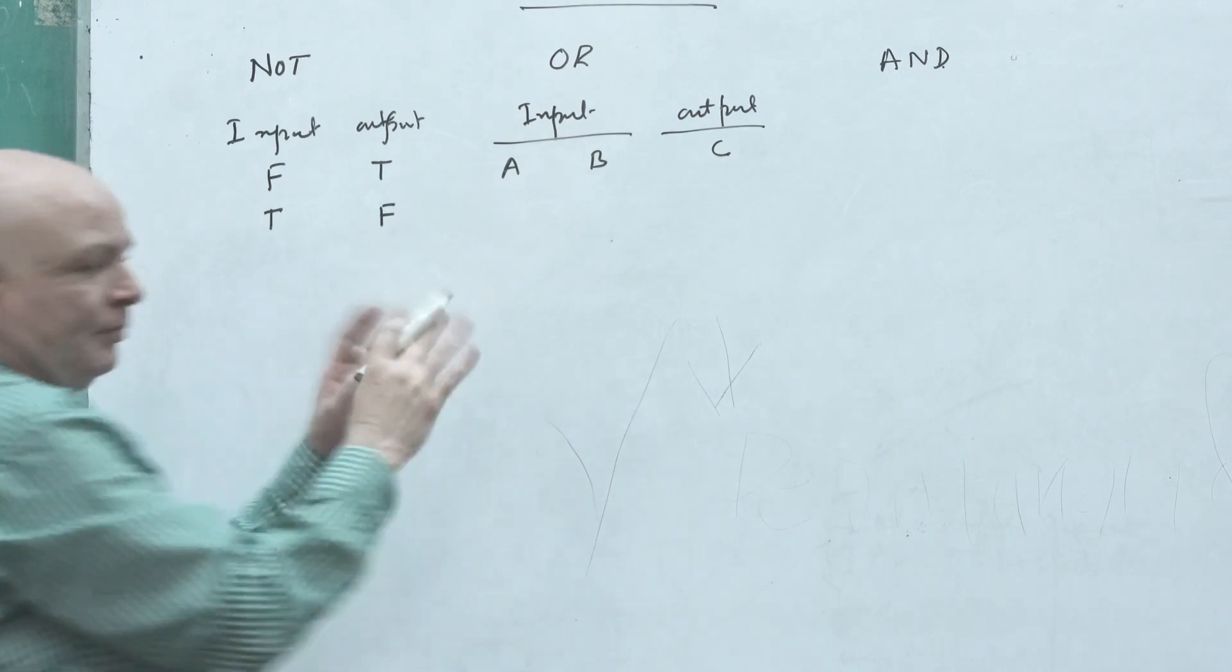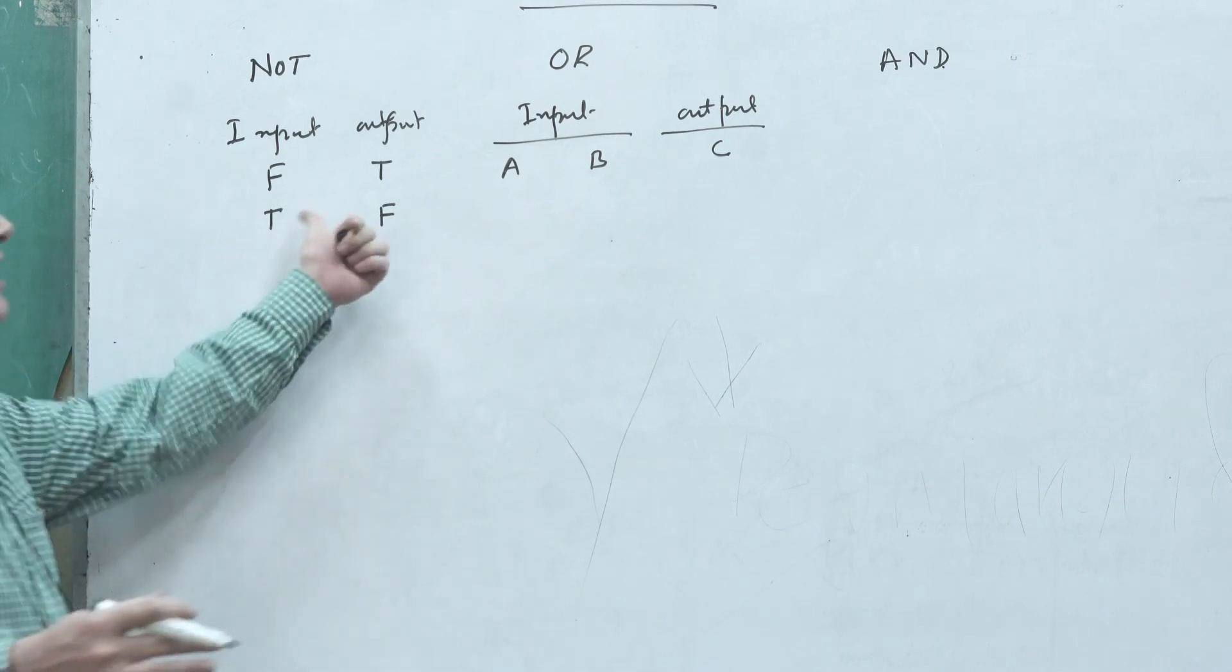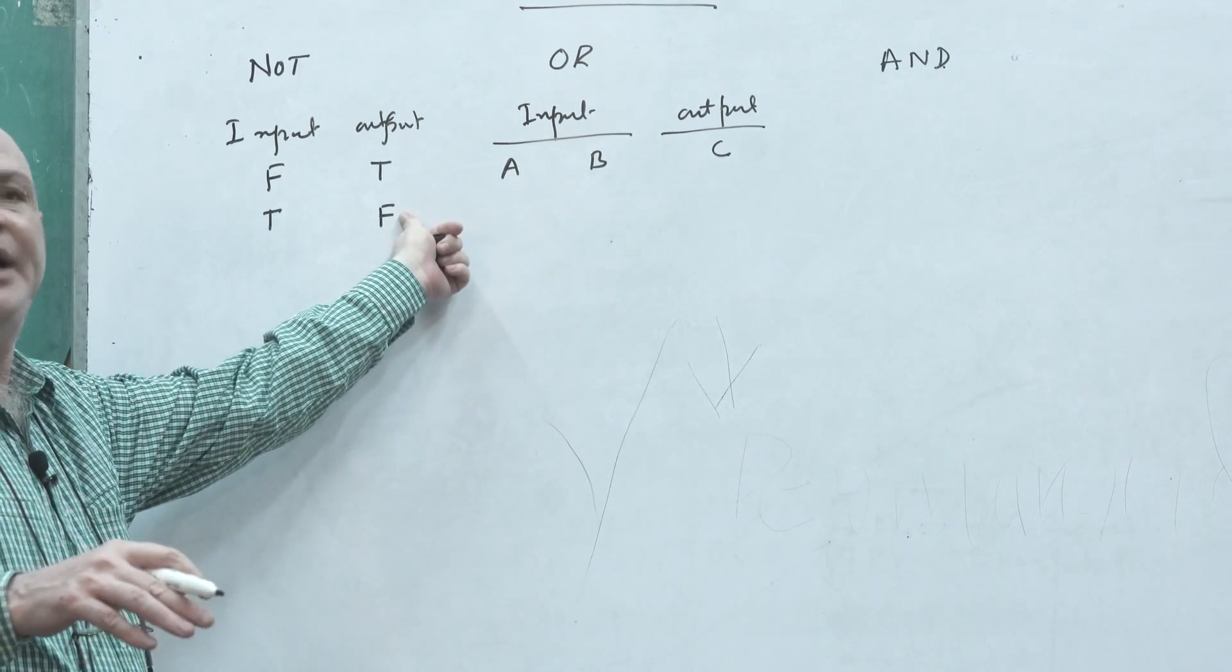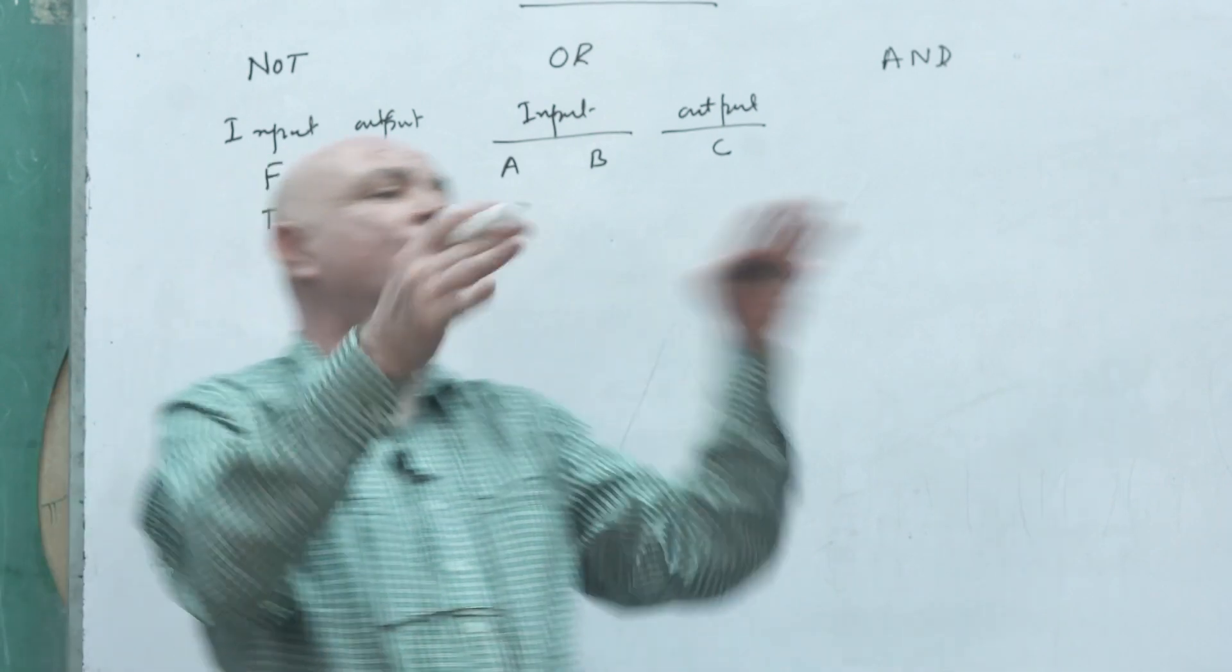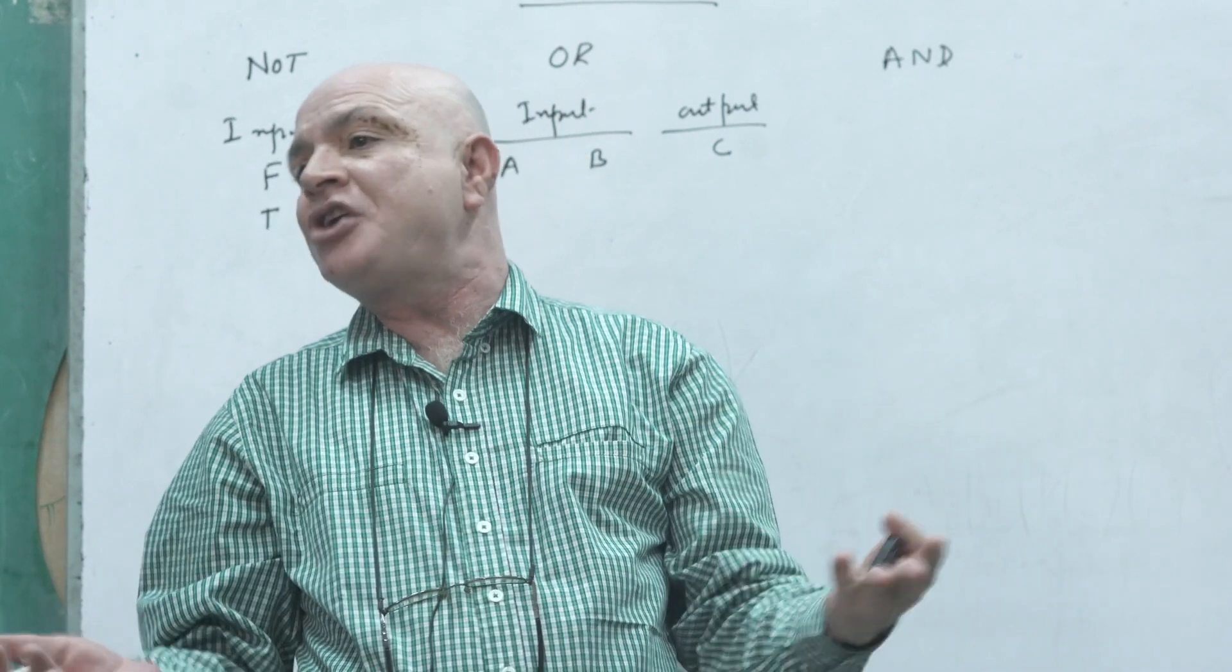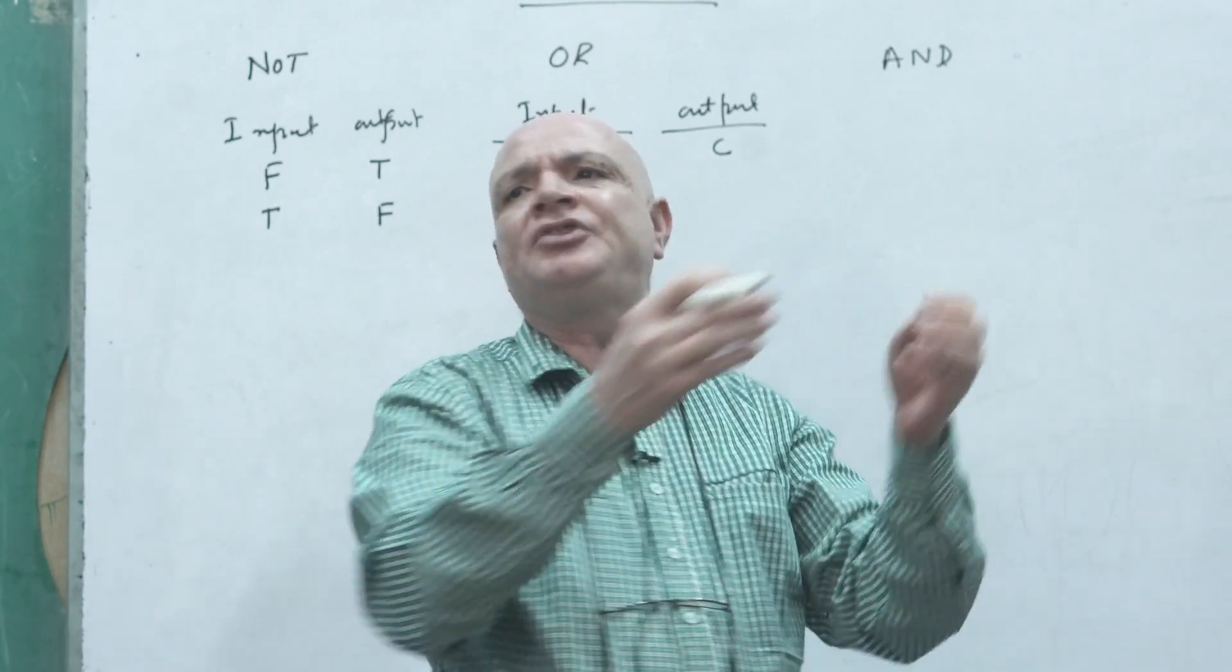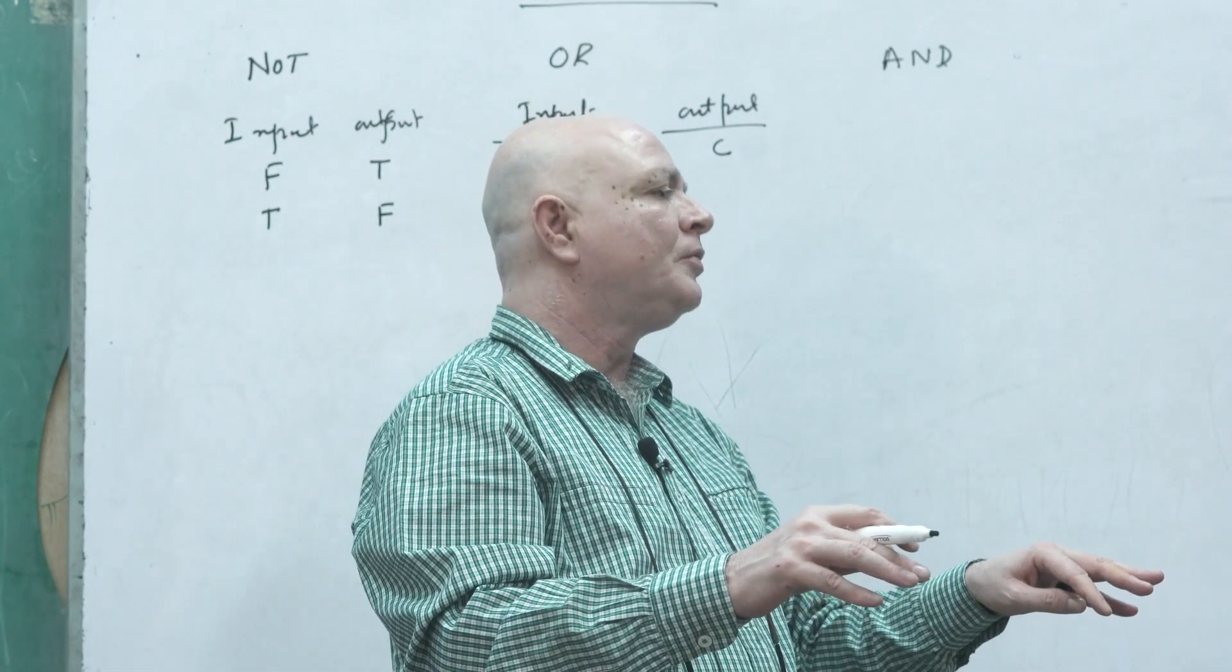So because OR means there must be multiple, more than one must be there. In negation only one input was there and one output was there. But in OR when we are considering means there can be more than one, multiple. So we are just taking the minimum example of two statements or two inputs.